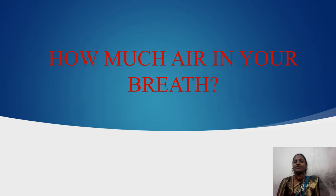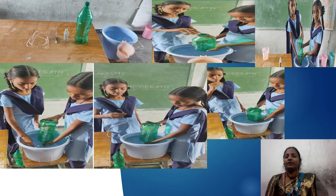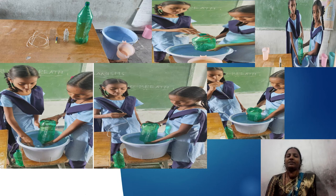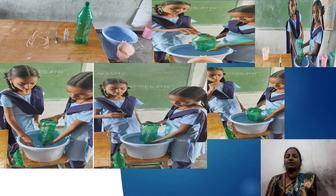Children, do you know how much air is in your breath? Let us do a small activity to find out how much air is in our breath. The required materials are a 2-litre plastic bottle, a 100 ml plastic bottle, a rubber tube, and a bucket of water. First of all, prepare a measuring cylinder. Take the 2-litre plastic bottle and the 100 ml plastic bottle. Pour 100 ml of water into the bottle and mark the water level after each addition. Mark the water level — the measuring cylinder is ready.